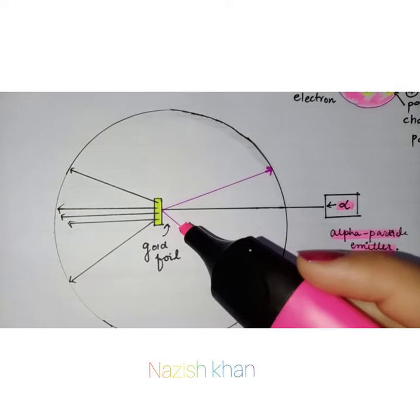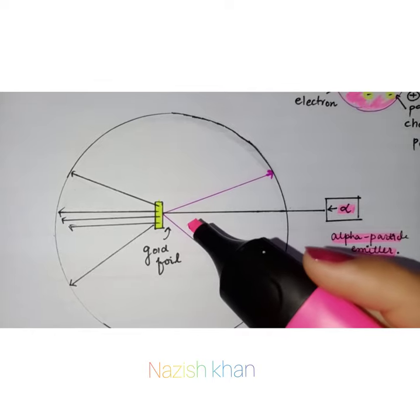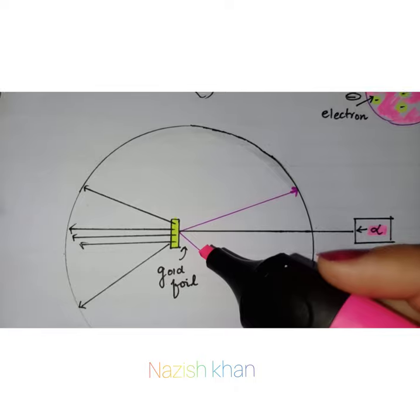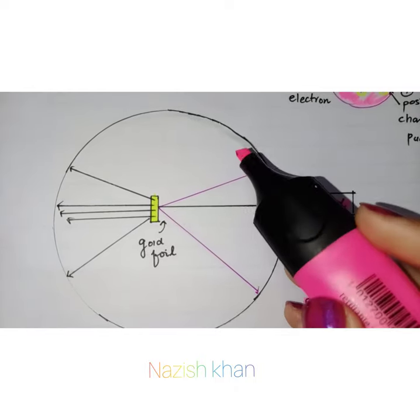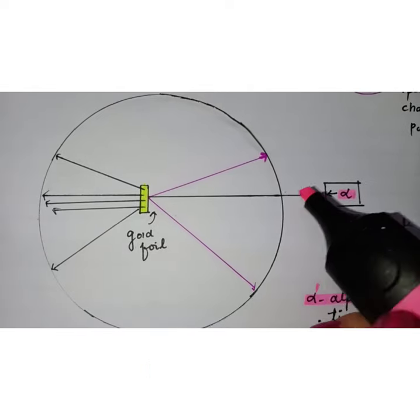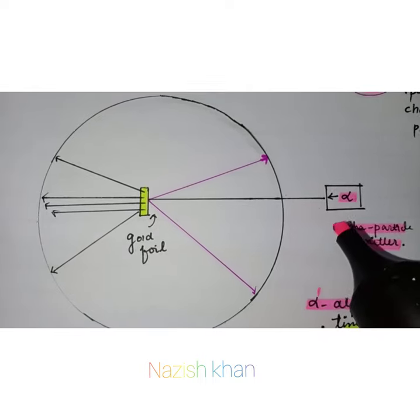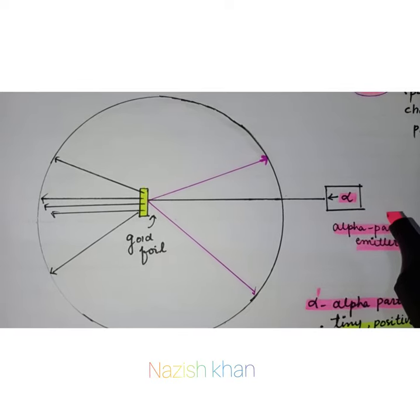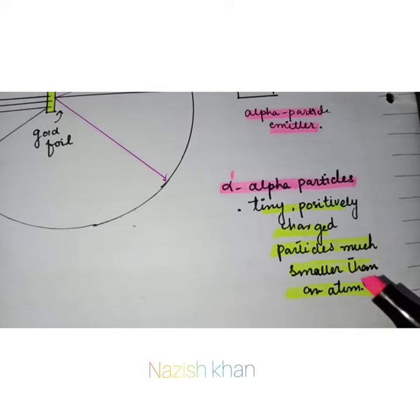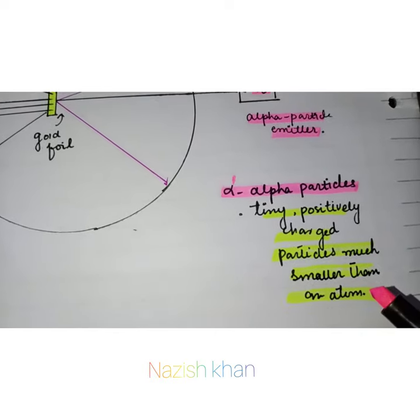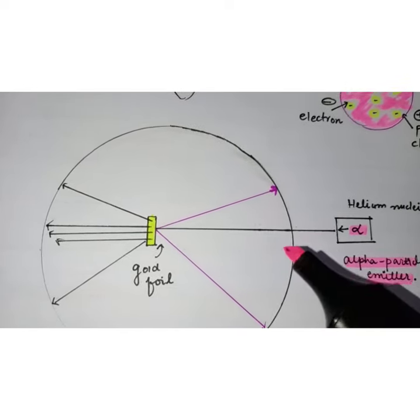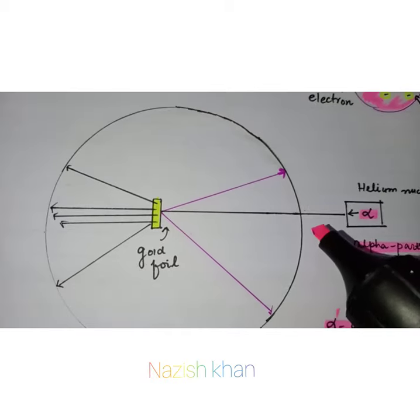They started out with a piece of gold foil, like tin foil or aluminum foil except it is made of gold. They took this piece of gold foil and shot tiny little things at it. What they shot at it were called alpha particles, which are tiny positively charged particles much smaller than the atom.